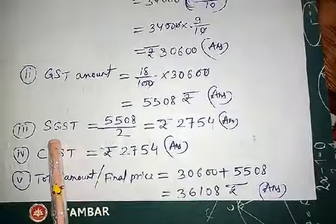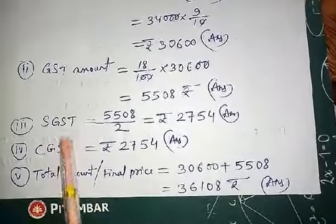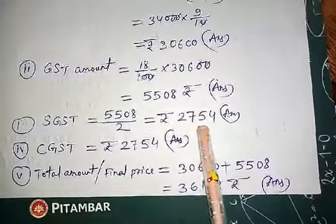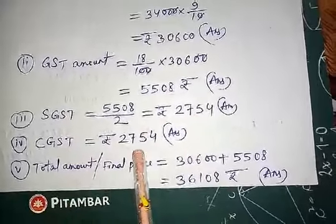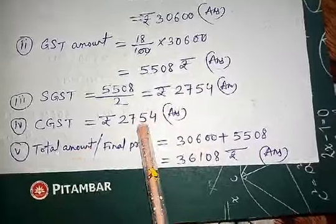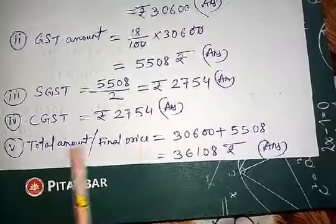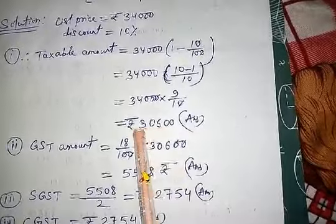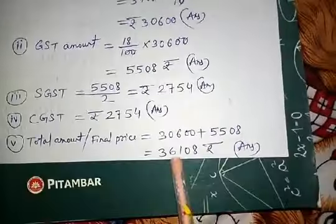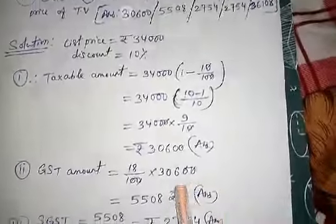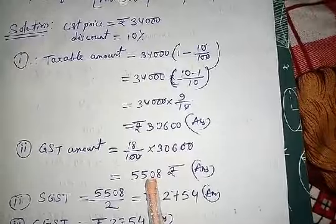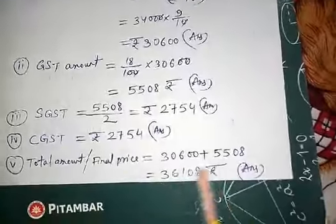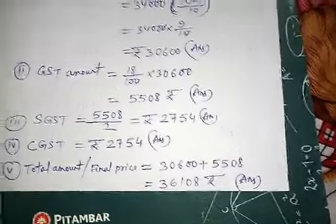CGST and SGST are equally divided, so we divide 5,508 by 2 — both CGST and SGST will be equal. Final price equals taxable amount plus GST. The price after discount is Rs. 30,600 and GST is Rs. 5,508, so when we add them, that is the final price.